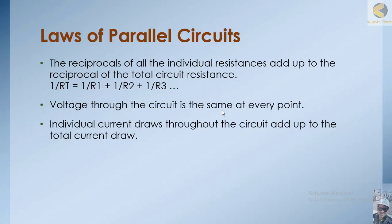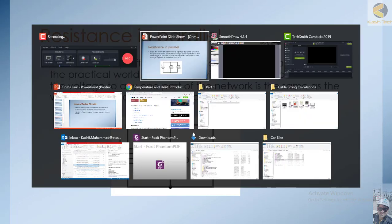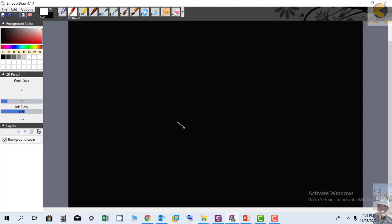The voltage through the circuit is the same at every point, while the individual currents throughout the circuit add up to the total current. For example, the voltage across R1 is the same as the voltage across R2 — voltage remains the same — whereas the current will change in each branch. Let's draw a circuit on the board to see how this works.